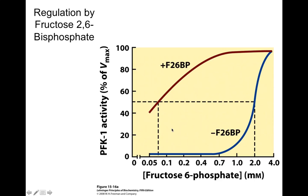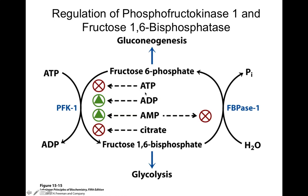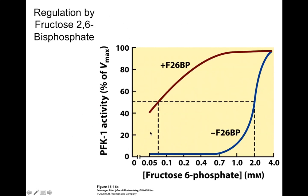Beyond ATP, ADP, AMP, and citrate, there's another important regulator: fructose-2,6-bisphosphate. It's an allosteric regulator that activates phosphofructokinase 1, a glycolytic enzyme, and inhibits fructose-1,6-bisphosphatase, a gluconeogenic enzyme. So when fructose-2,6-bisphosphate is high, we go toward glycolysis; when it's low, we go toward gluconeogenesis.